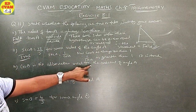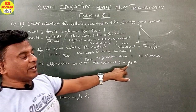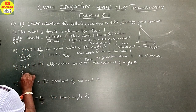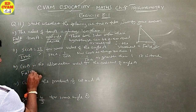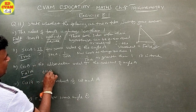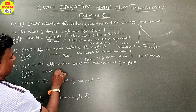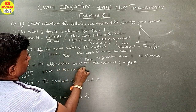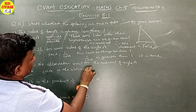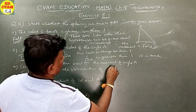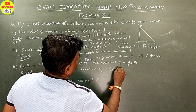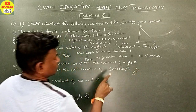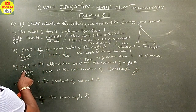Third: cos A is the abbreviation used for cosecant A. No, cos A is the abbreviation for cosine. Therefore, it is false.